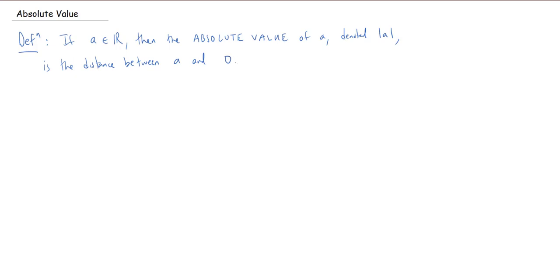Another word you might sometimes see, not so much in this class but more generally in mathematics, is magnitude, which is supposed to describe how big something is — in this case, how far away from zero. Or even sometimes you might see the word norm, for instance when you're working in abstract algebra or even sometimes in complex analysis.